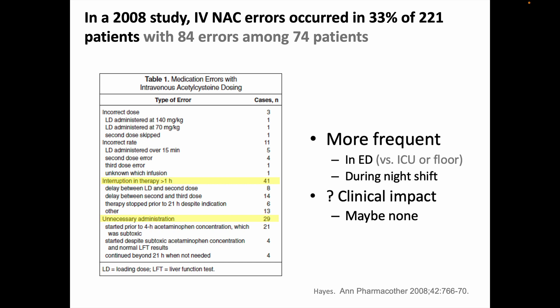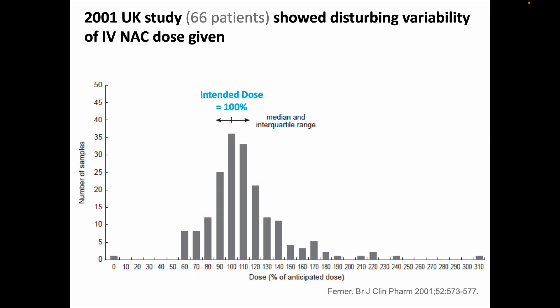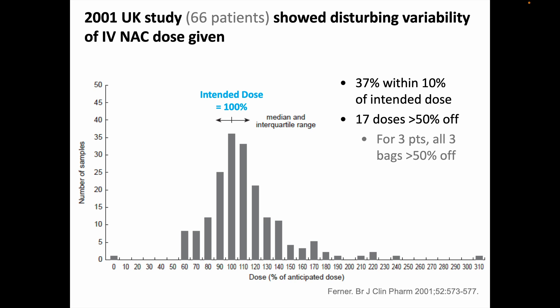These errors occurred more commonly in the emergency department, where it's usually quite chaotic compared to elsewhere in the hospital, and more commonly during night shift. On the other hand, there's no good evidence that anyone was harmed by these administration errors. Here's data from a UK study showing disturbing variability in IV NAC dosing. They compared doses given to patients against the doses they should have gotten by weight. They found that only 37% got within 10% of the intended dose, and 17 doses among 66 patients were more than 50% off — but again, there was no evidence of harm from these dosing errors.